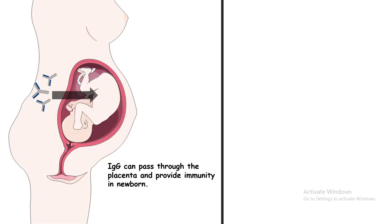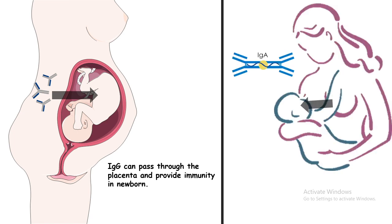This kind of immunity can also be transferred from mother to baby. When the baby is in the womb, IgG antibodies from the mother's body can travel across the placenta into the newborn, providing immunity. Also, IgA secreted in the colostrum can provide immunity to the newborn in the initial days.